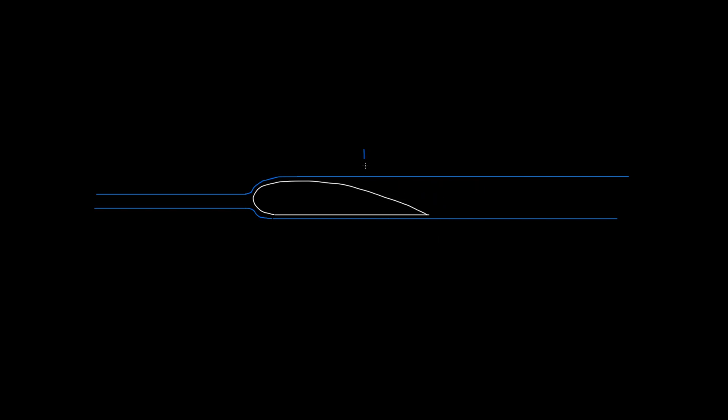You might think the airflow over the top just goes straight, but then there would be a big gap with no air — a vacuum or very low air pressure — on the top trailing area. Air always wants to move from high pressure into a place with low pressure. So what actually happens is that the airflow sticks very closely to the wing, and once it leaves the trailing edge it goes straight again. The airflow follows the shape of the airfoil.